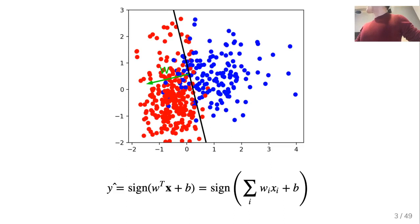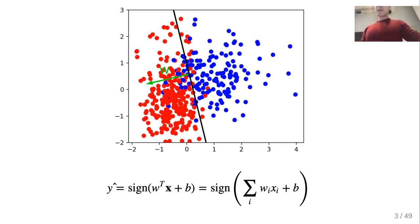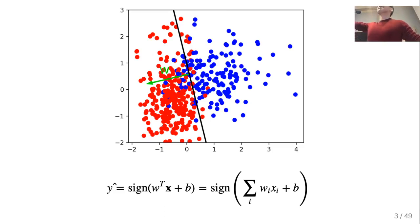W transpose is a normal vector, and plus B shifts it away from the origin — if you don't have plus B, it'll all go through zero. So plus B shifts it away from the intersection. The whole goal of classification is to find the W's and B's that separate these classes. That's the whole goal of classification for linear models.